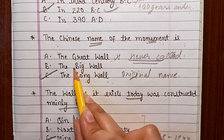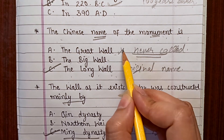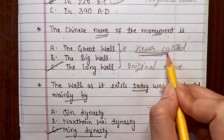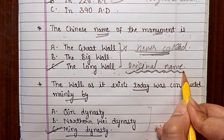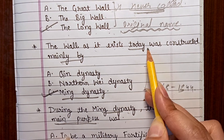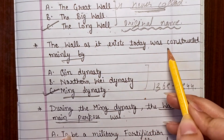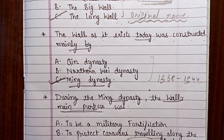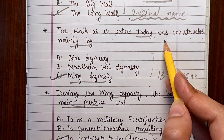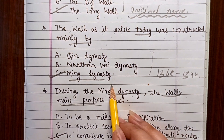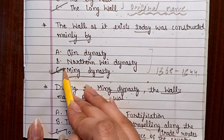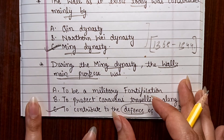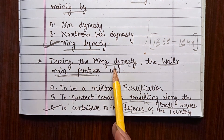[Listening audio continues]: 'The Great Wall as it exists today was constructed mainly during the mighty Ming Dynasty from 1368 to 1644. Under the Ming rulers, Chinese culture flourished, and the period saw an immense amount of construction including bridges, temples, and pagodas. In earlier centuries, the wall held little importance as a military fortification and mostly served to protect caravans traveling along the profitable trade routes. But during the Ming Dynasty, the Great Wall was considered vital to the defense of the country.'